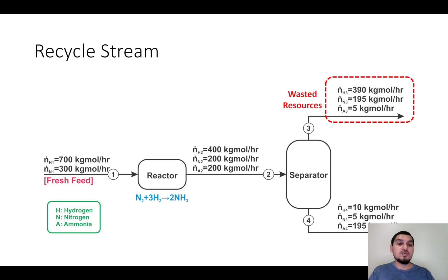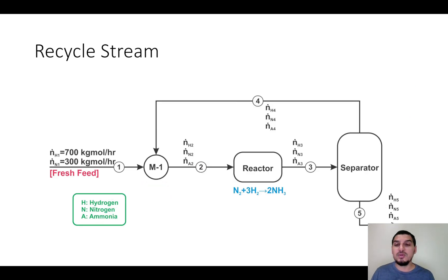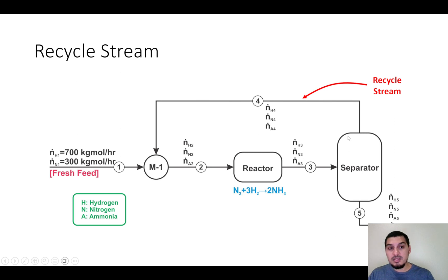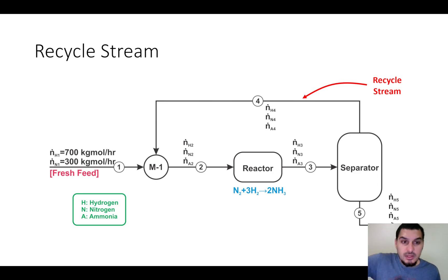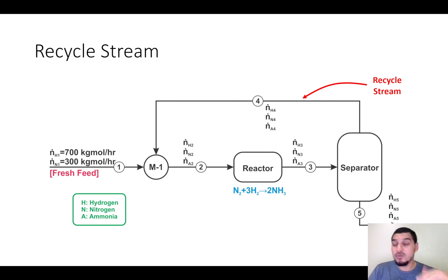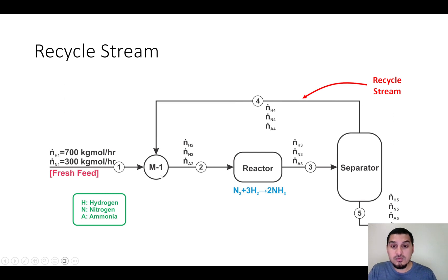What we can do is recycle these unreacted hydrogen and nitrogen and feed them back to the reactor. This is what we call a recycle stream — a stream that contains components that can be used again. These are recycled and mixed with the fresh feed. We now have two types of feeds: the fresh feed and the reactor feed, which is the product of mixing the fresh feed and the recycle stream. A mixer is added, and then the product is fed to the reactor, so we are no longer wasting resources.